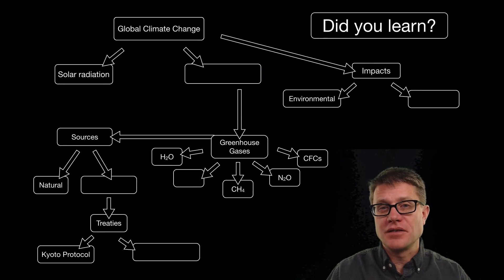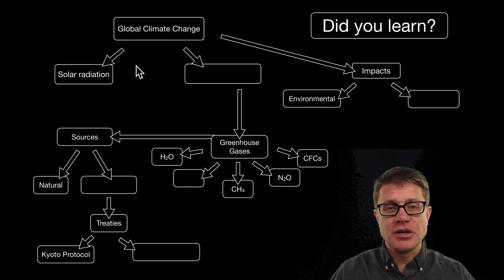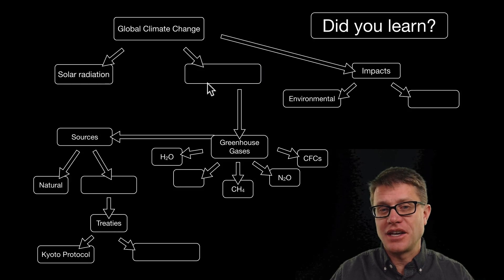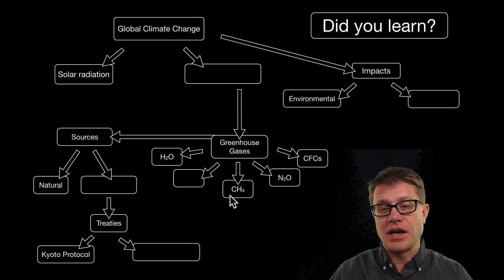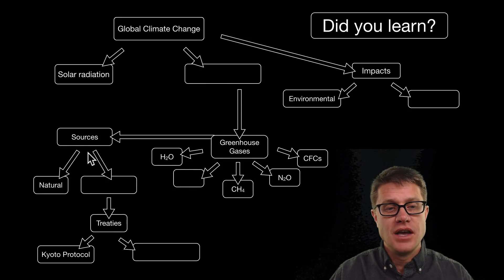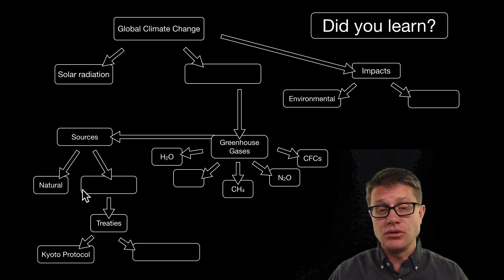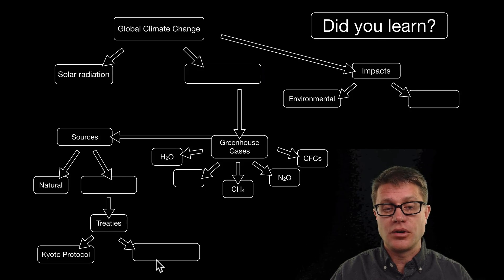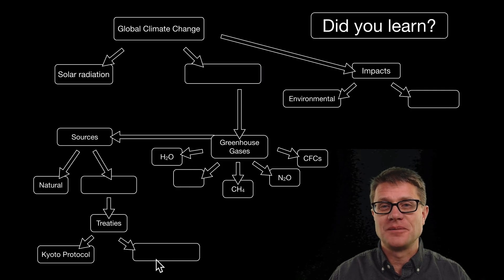So, did you learn the following? Global climate change is affected by solar radiation and the greenhouse effect, and it is going to cause human impacts. The greenhouse gases are water vapor, carbon dioxide — the big one — methane, nitrous oxide, and CFCs. Remember, the source of these greenhouse gases is both natural and anthropogenic. To reduce that, we are signing treaties like the Kyoto Protocol and the Paris Agreement. That is global climate change, and I hope that was helpful.